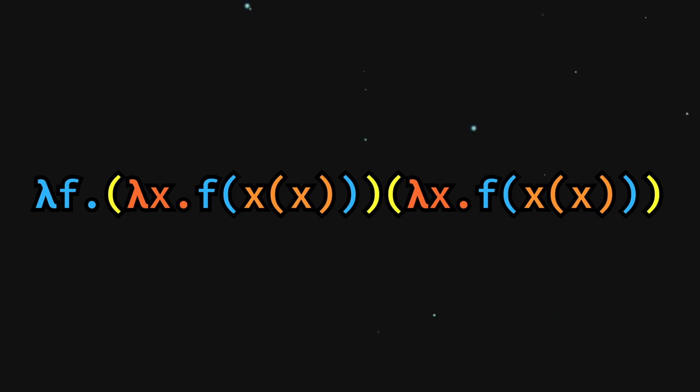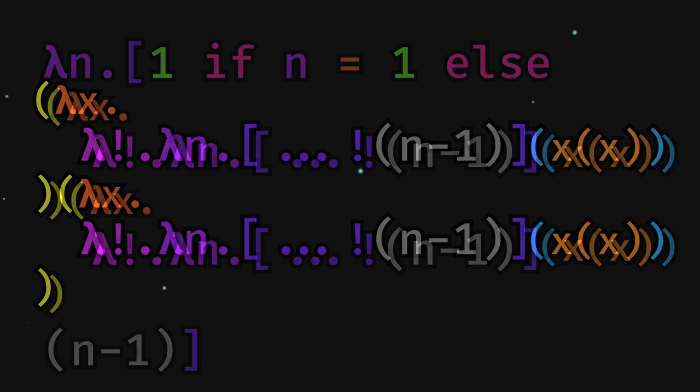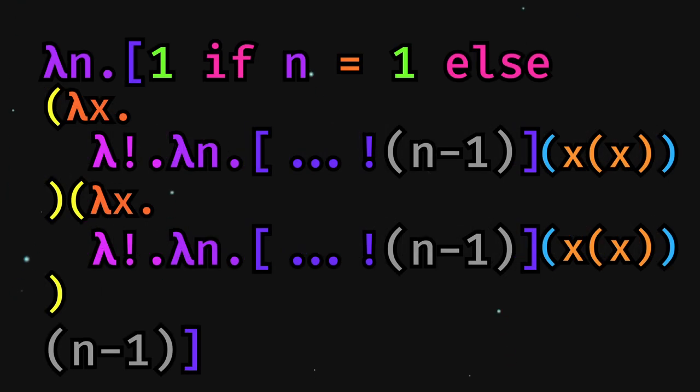To see, let's pass it our factorial function. This simply returns factorial called with x of x, again exposing the inner function for use with a number. Given 1, it works as expected, but what if we pass it a 2?